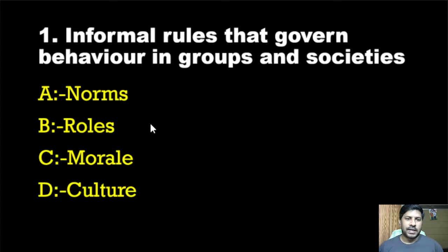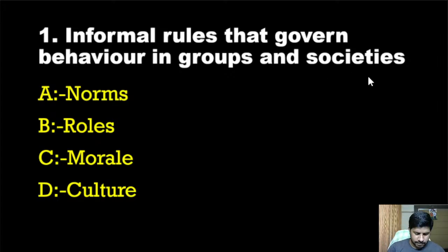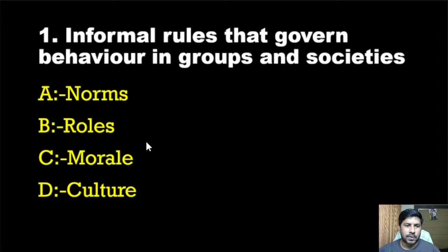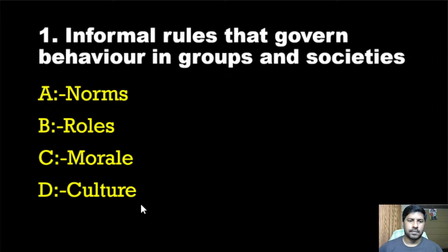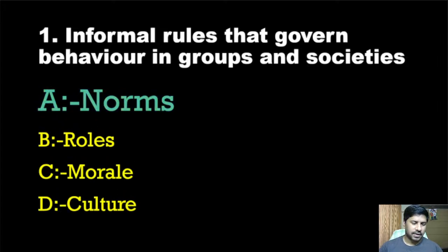First question: Informal rules that govern behavior in groups and societies. Options are: norms, rules, moral, culture. The correct answer is option A, that is norms.